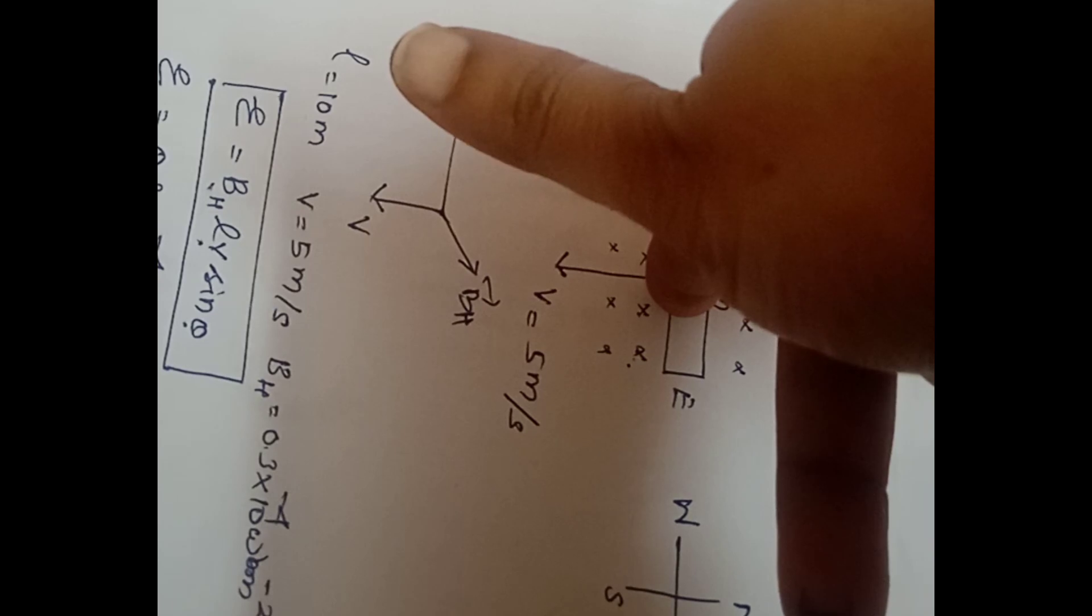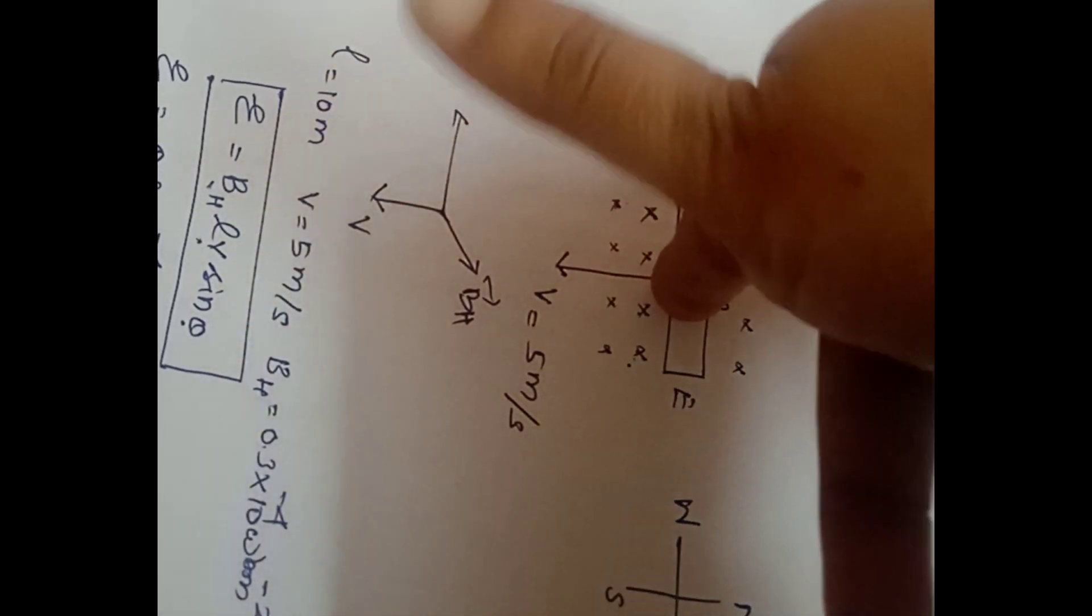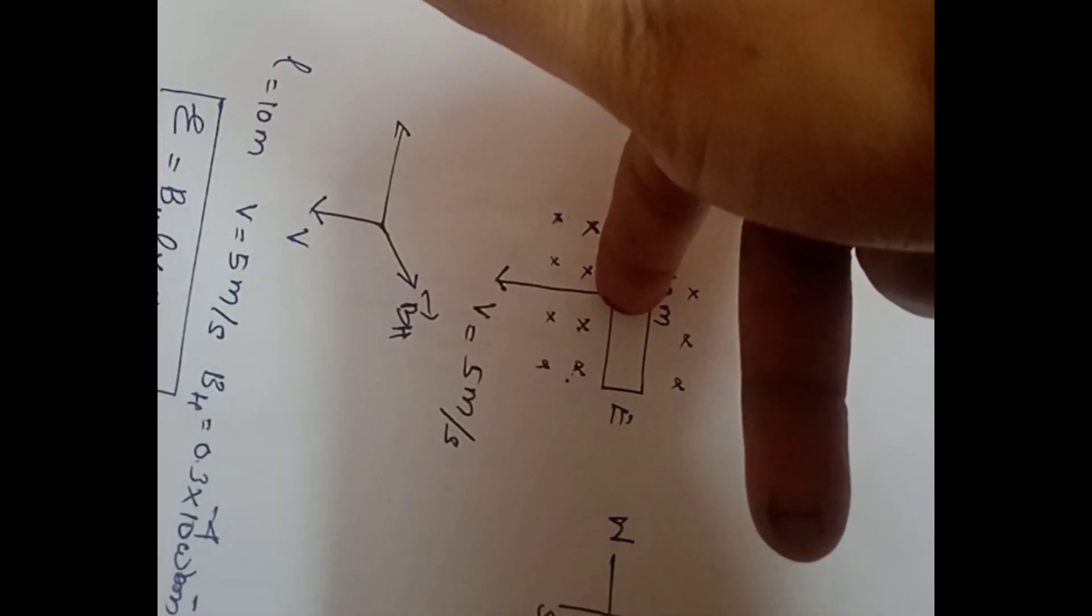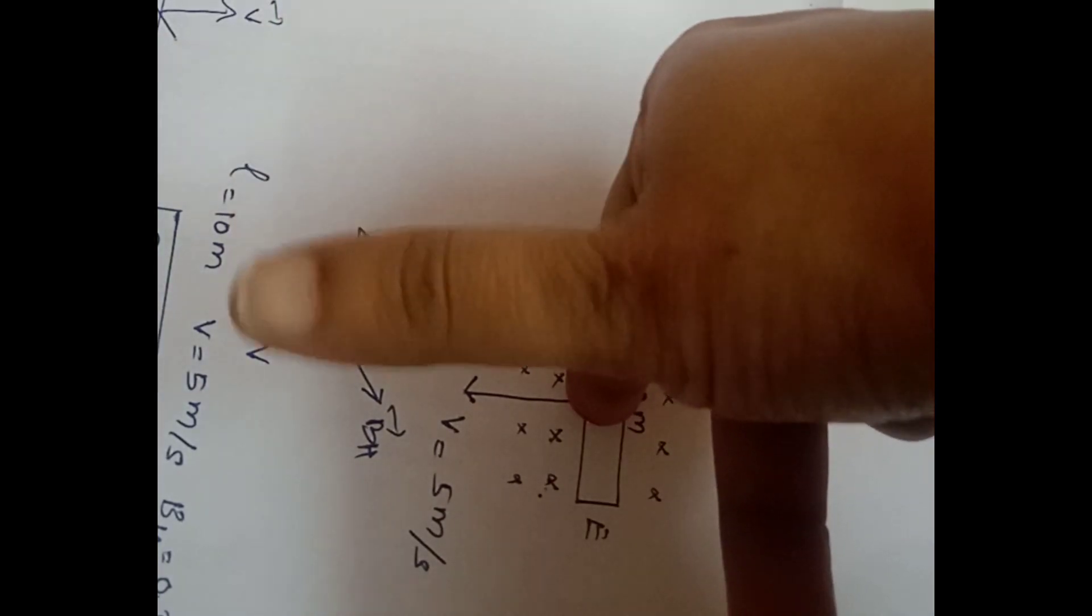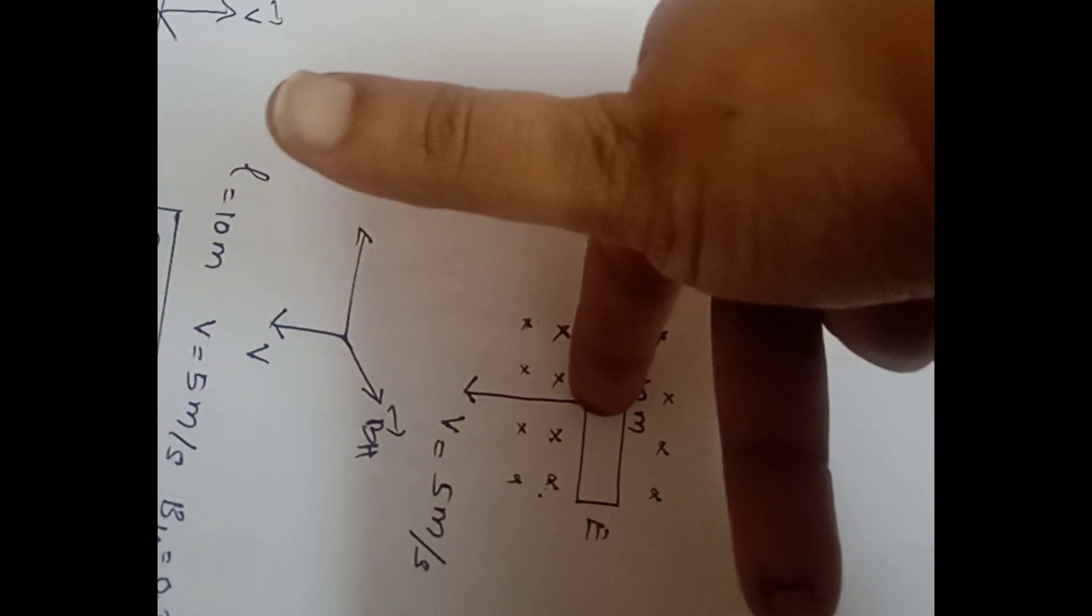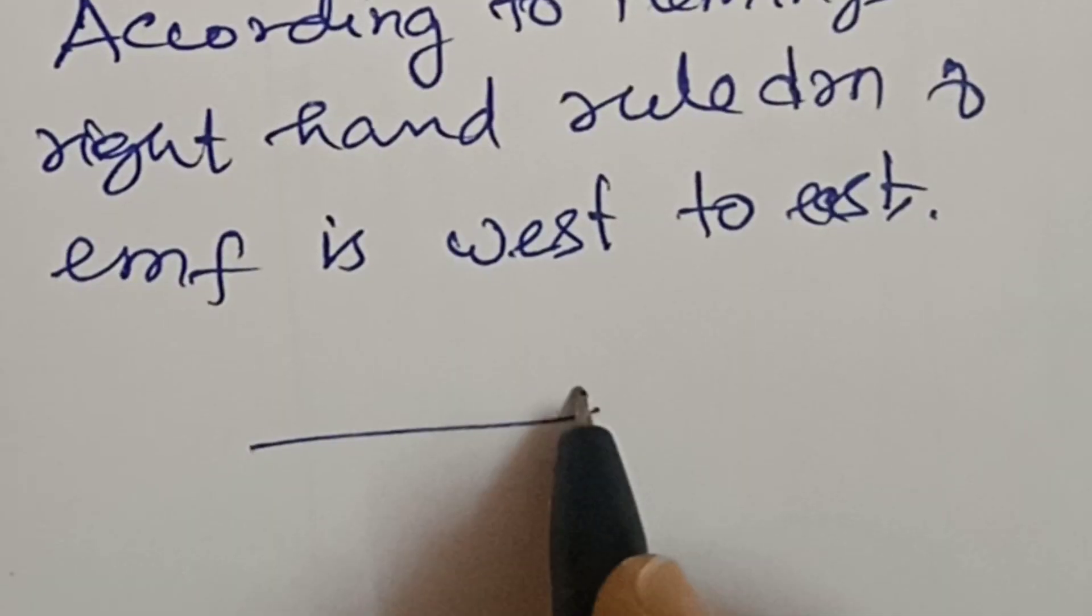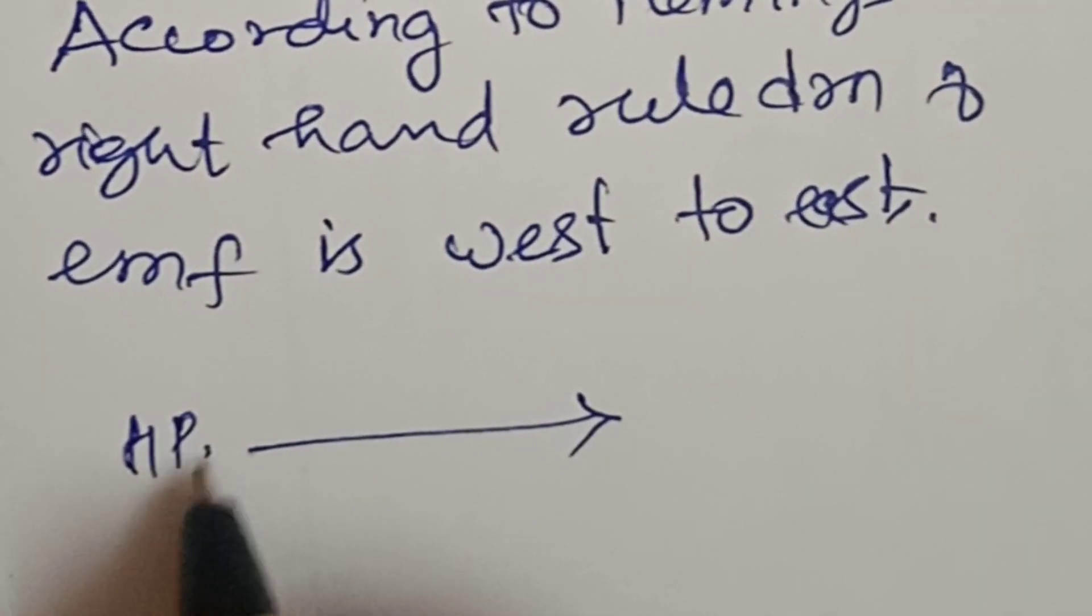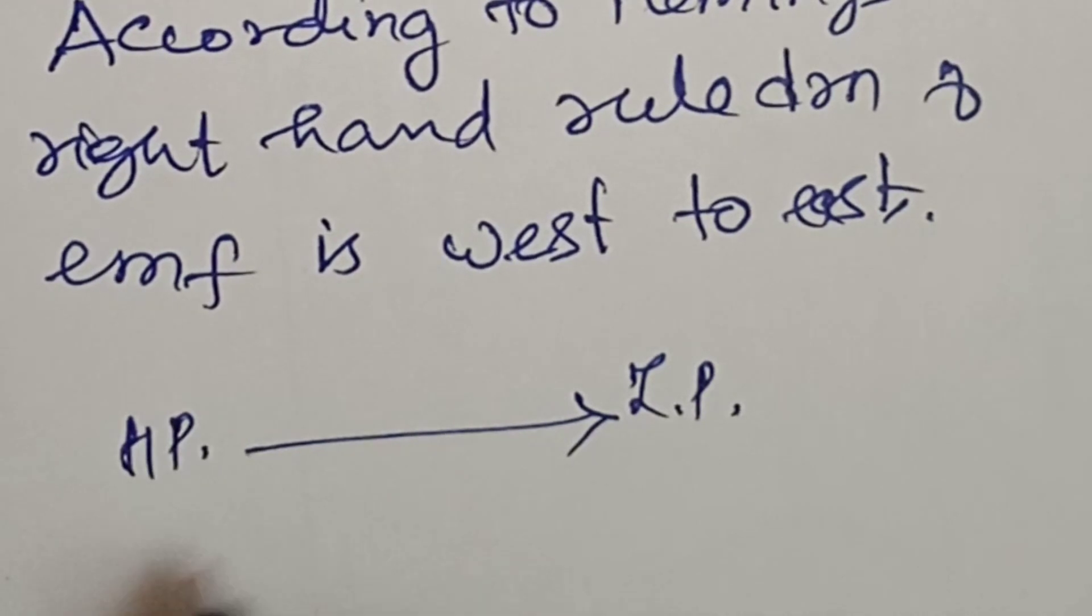Induced current is west to east. So according to Fleming's right hand rule, direction of EMF is west to east. Induced current is west to east. Current is higher potential to lower potential. West is higher potential to lower potential.